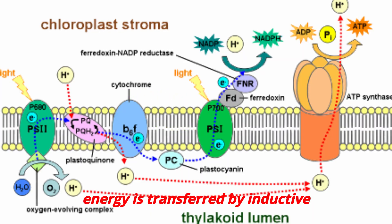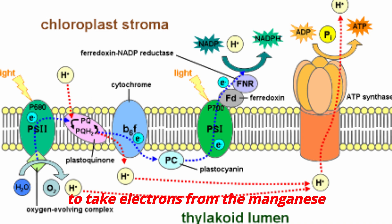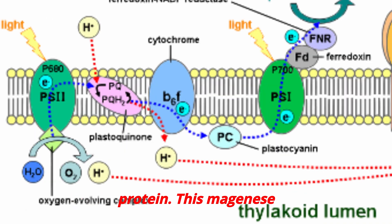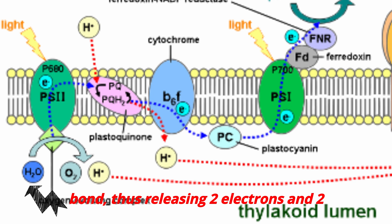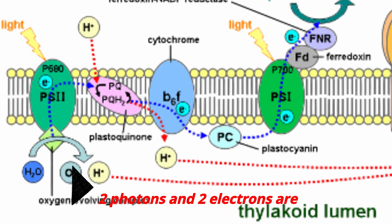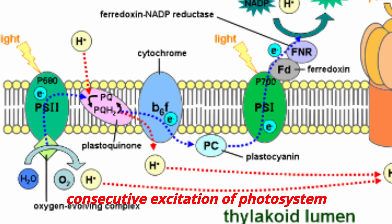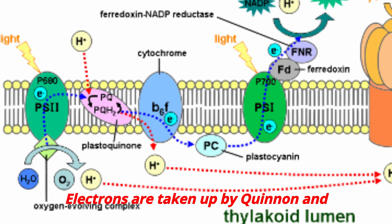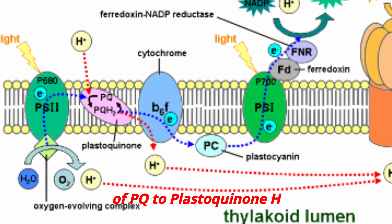The energy is transferred by inductive resonance to P680, which loses an electron removed by pheophytin, making it positively charged and causing it to take electrons from the manganese protein. This manganese protein takes electrons from the water molecule; each electron comes from the O-H bond, releasing two electrons and two H⁺ ions. Two photons and two electrons are released one at a time by consecutive excitation of photosystem P680. Electrons are taken up by quinone and transferred to plastoquinone; reduction of PQ to plastoquinone-H requires two electrons and two H⁺.